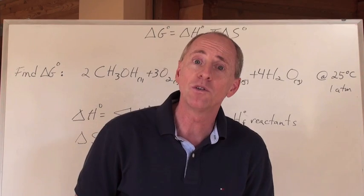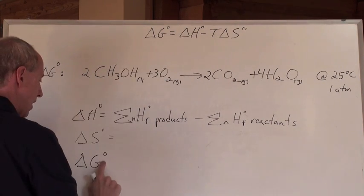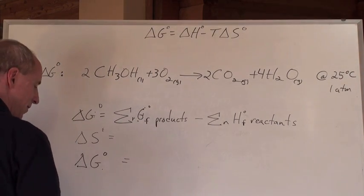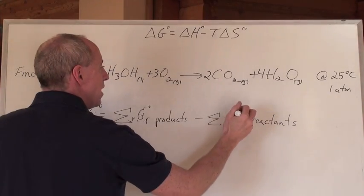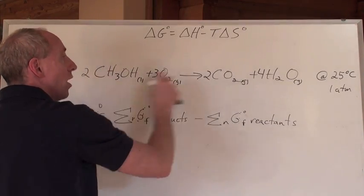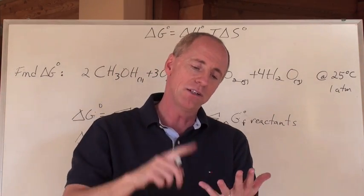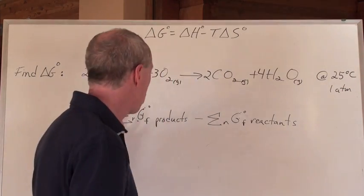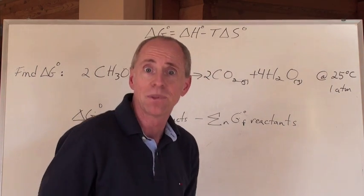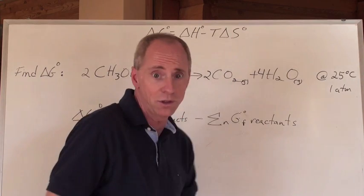Alternatively, the chart may also have delta G formation values. You can compute delta G directly as the sum of delta G formations of products minus reactants — the same products-minus-reactants approach. Your charts will have delta H, S, and delta G values. You can either use delta G formations directly or calculate via delta H and delta S — both methods will give you the same answer.